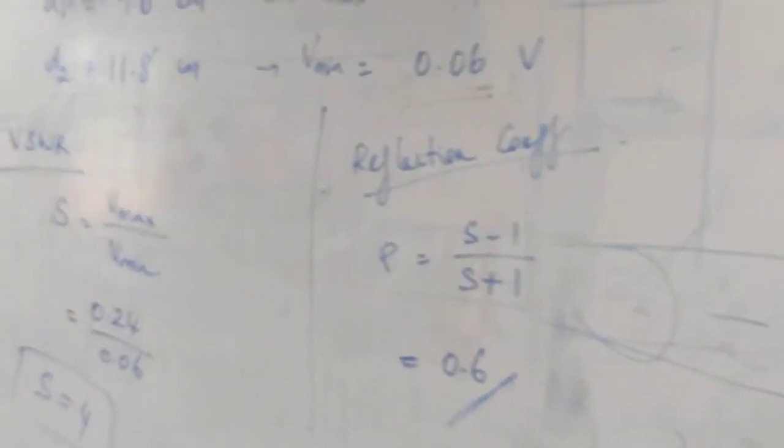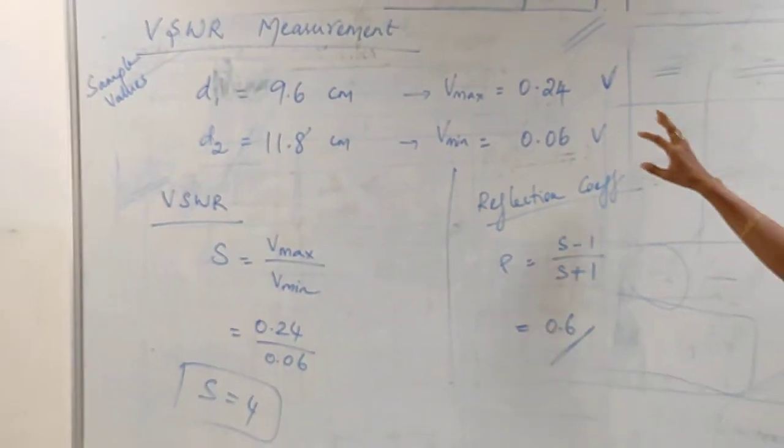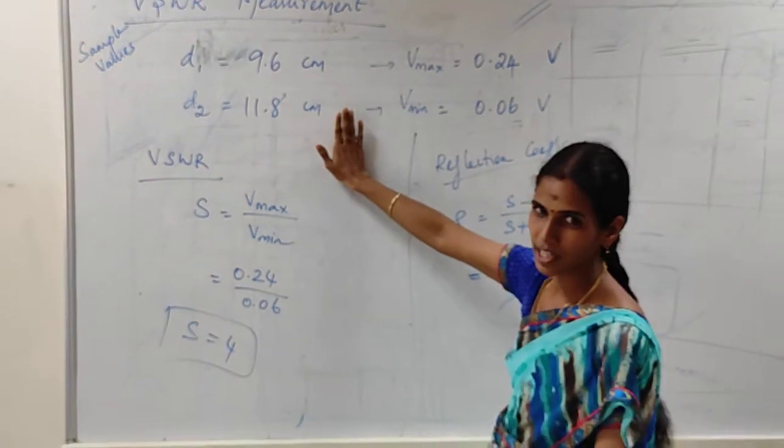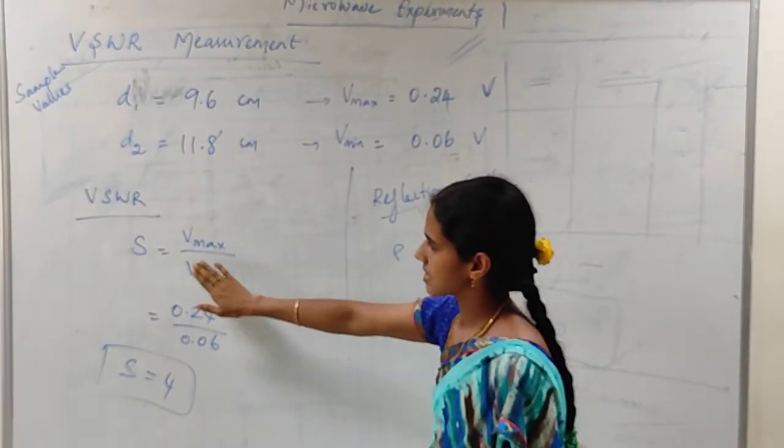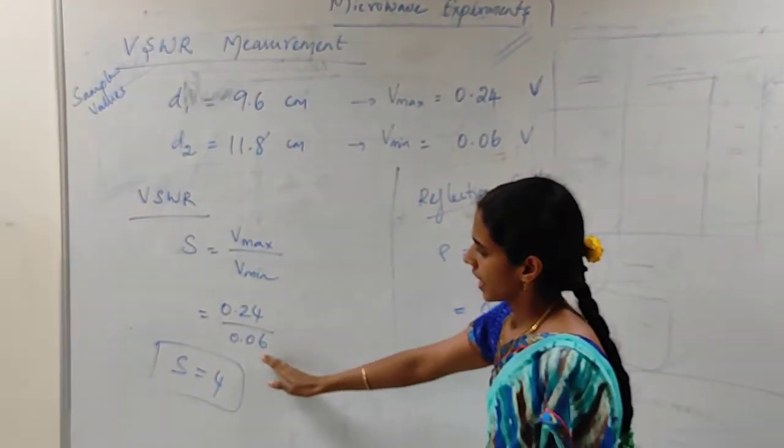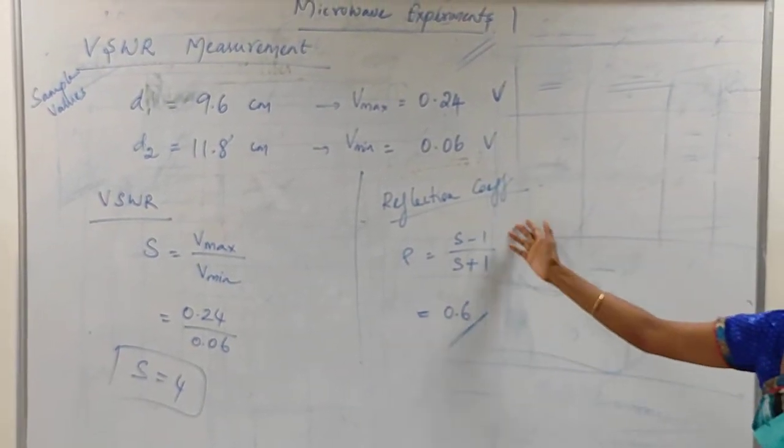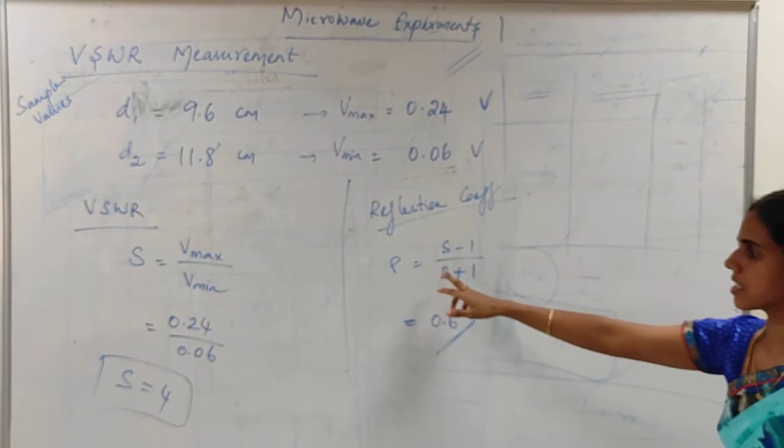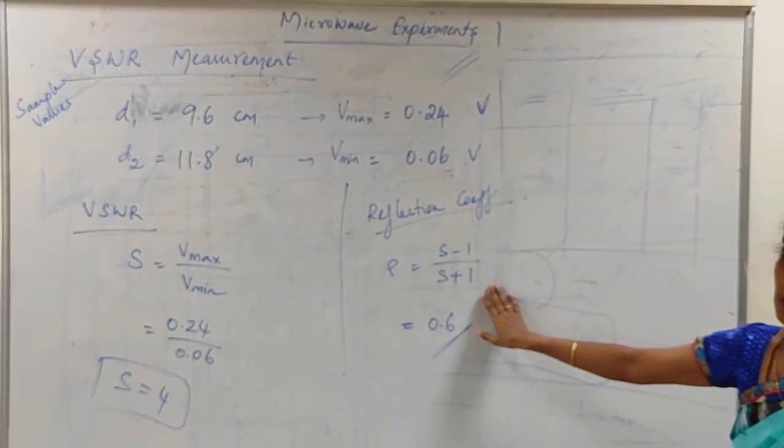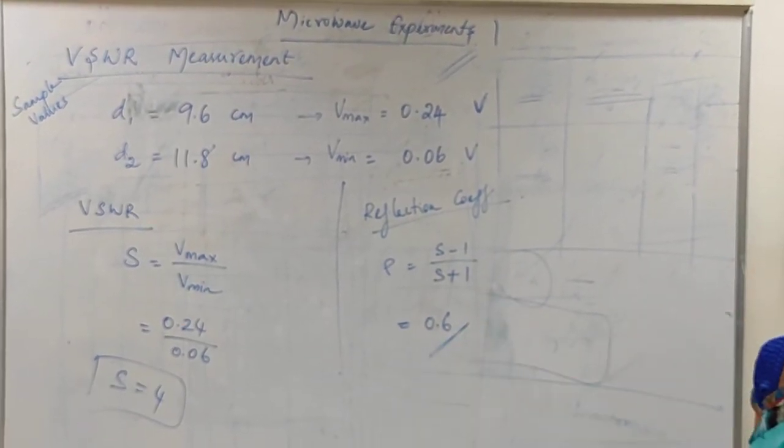So about the calculation part, look at the board. This is the formula. I have measured d1 and d2 values also. S is equal to Vmax divided by Vmin. I have applied and I have obtained the lambda G value. And if you want, you can also find the reflection coefficient rho is equal to S minus 1 divided by S plus 1. This is all about the value.